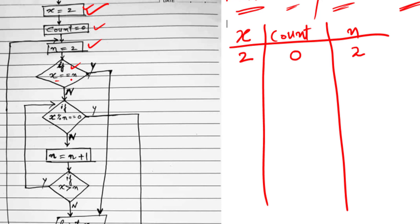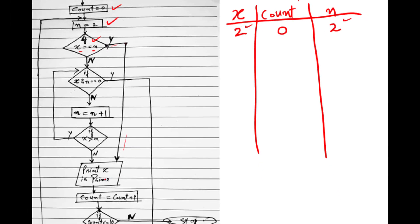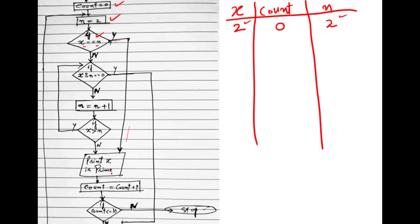This is a double equals sign used for comparison. I am checking whether the value of x is equal to the value of n. If they are equal, I move along this line and print that x is a prime number.